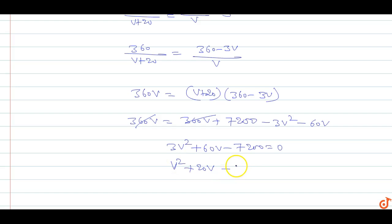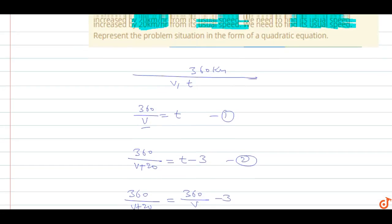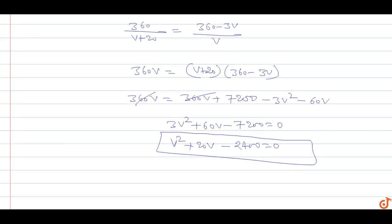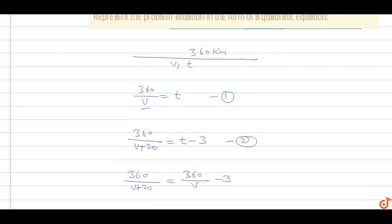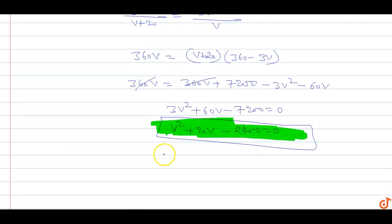Dividing through by 3, this is the quadratic equation in V: V² + 20V minus 2400 equals 0. This is the quadratic equation in V. Now we have to find the value of V — the usual speed.